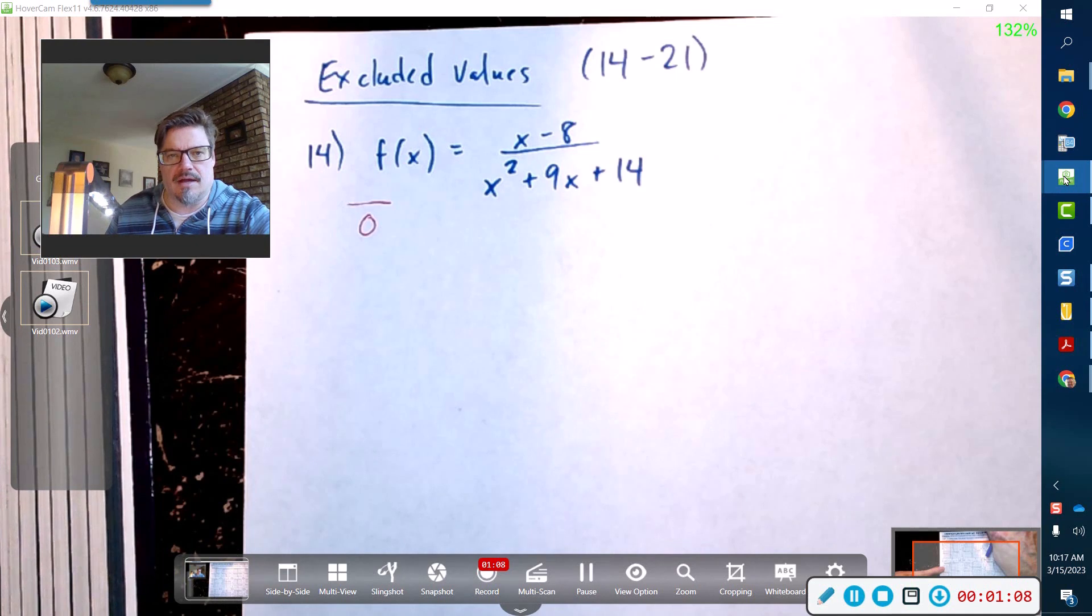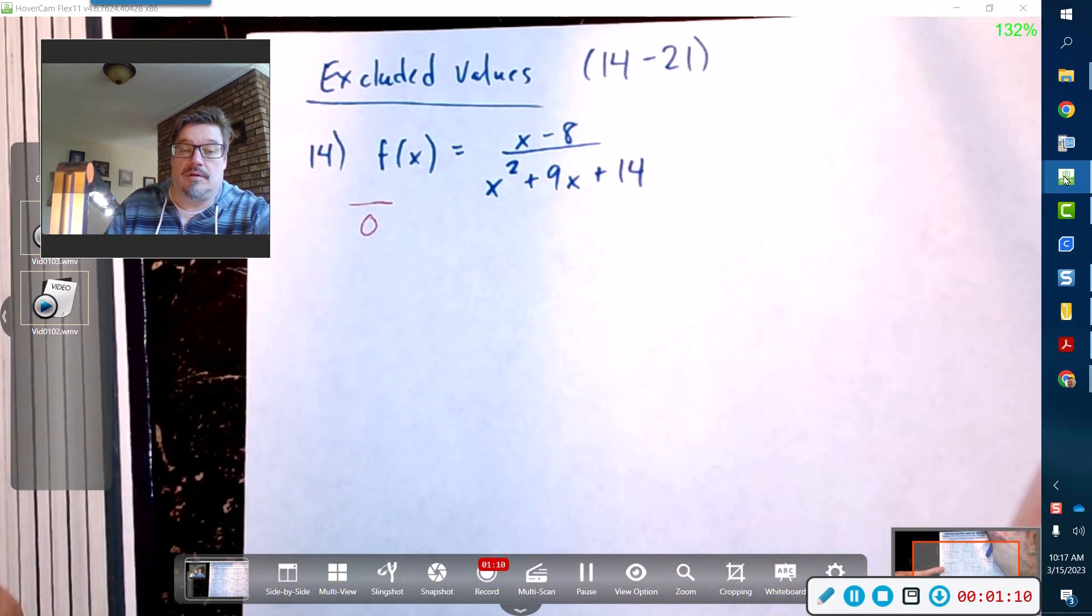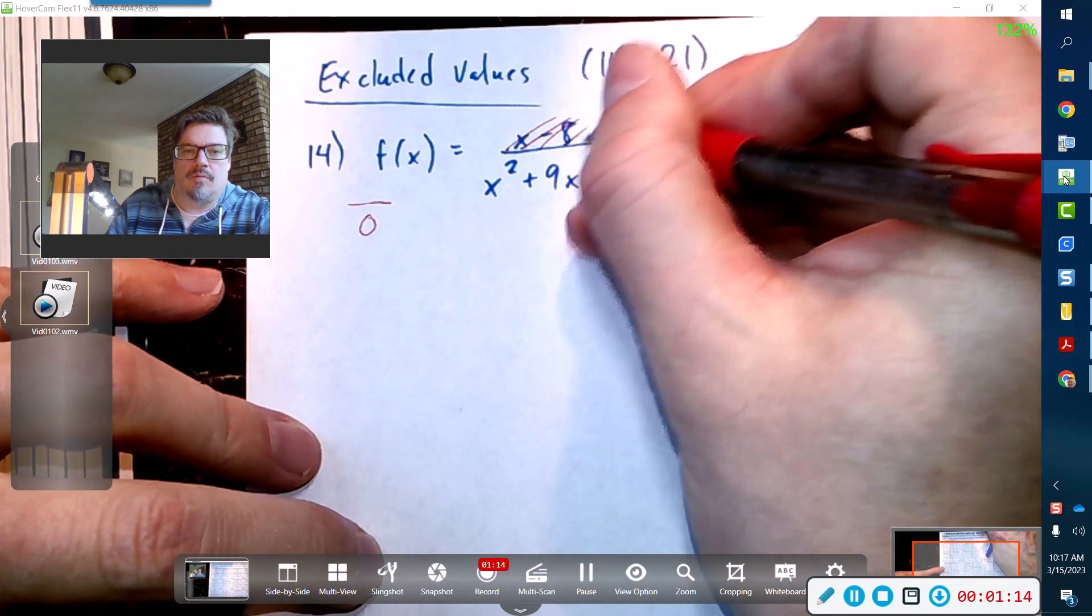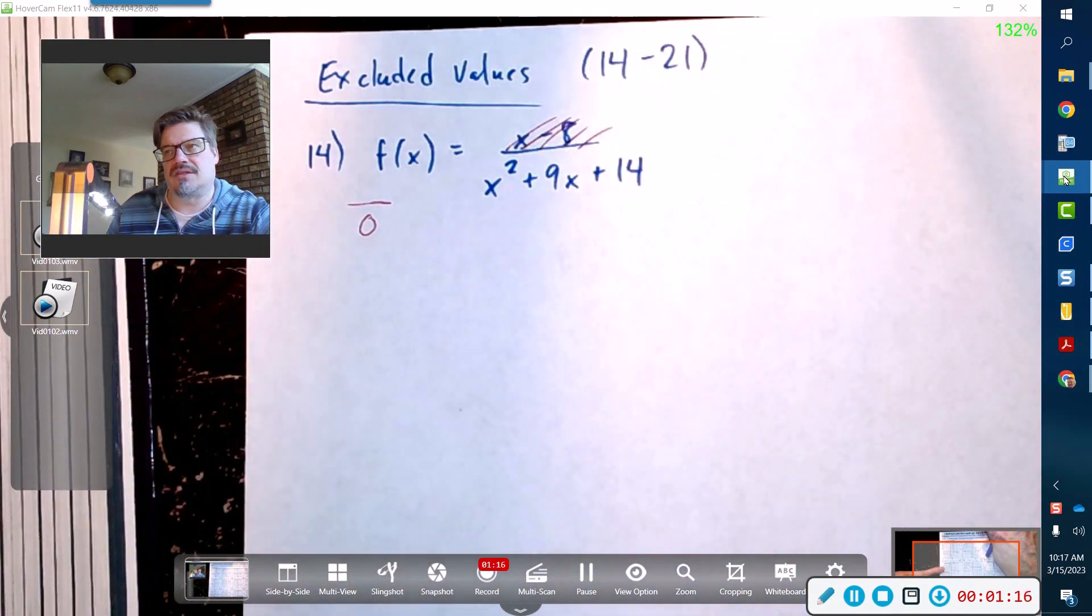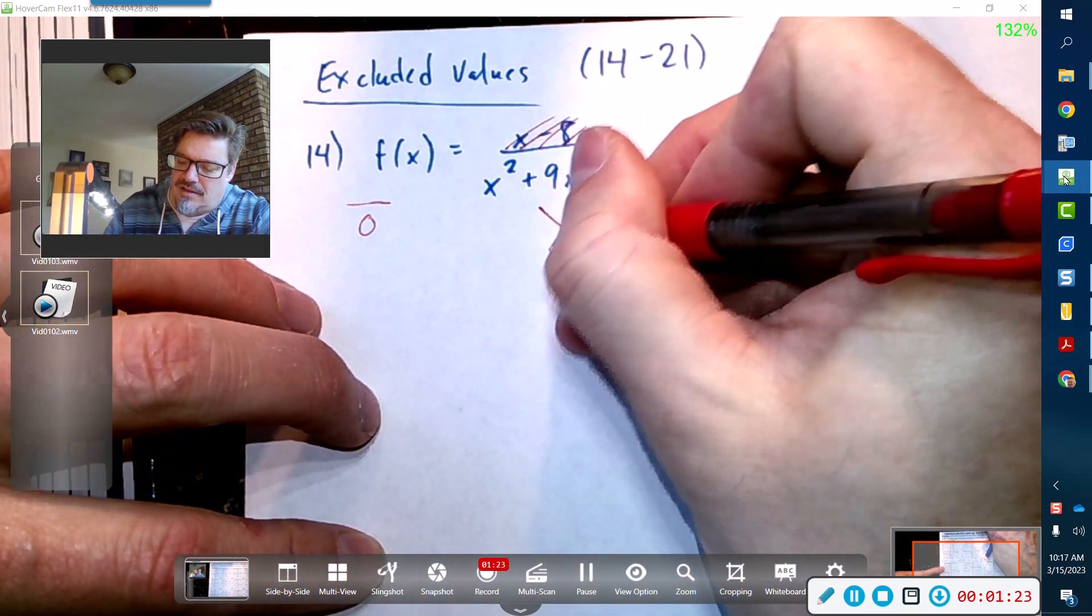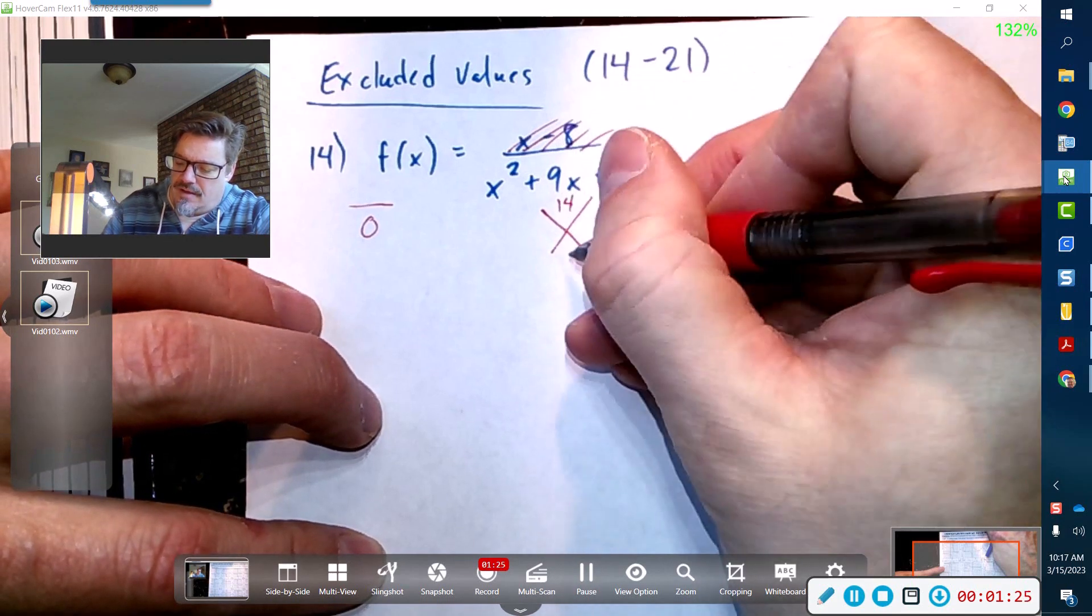Excluded values only happen when you get a division by zero. You just cannot divide by zero—everything breaks down from programs to calculators, including the whole algebraic structure. You don't really care about the numerator at all because you can have an output of zero, but you can't create division by zero.